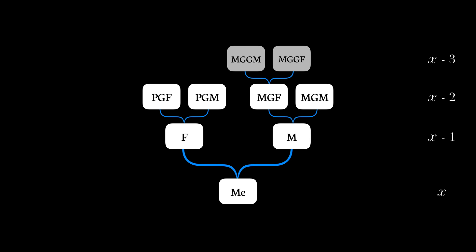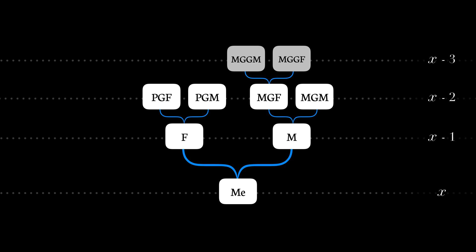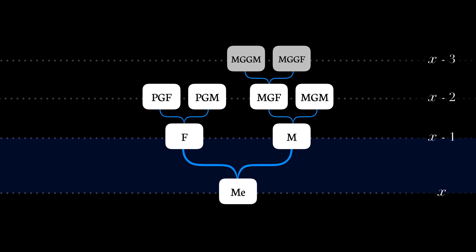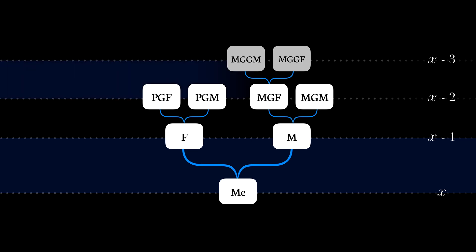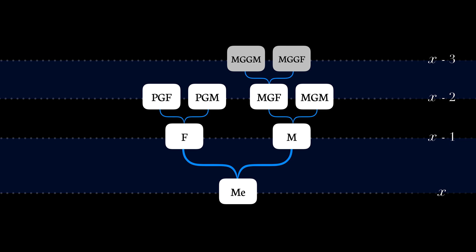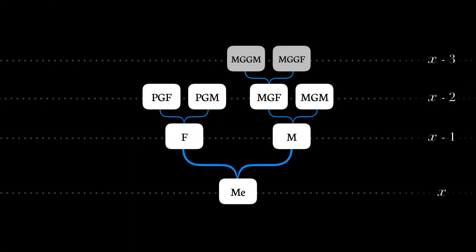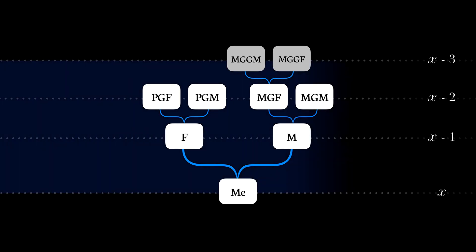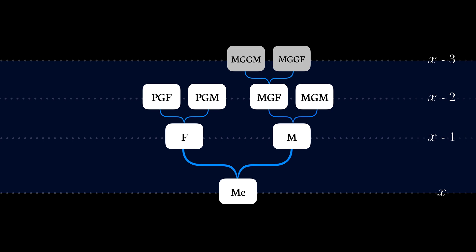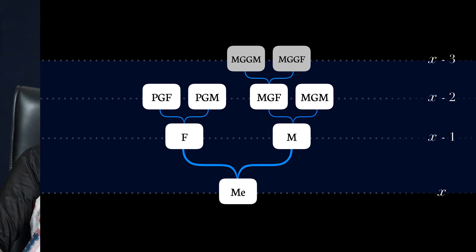Now if we compare two continuous generations, say generation X and generation X-1, the similarities are greater than the dissimilarities. Even if we take generation X-2 and generation X-3, we will still find that these generations have a lot of similarities — dissimilarities are rare. Two continuous generations hence exhibit a significant continuity in their characteristics. Now let us take two discontinuous generations — in other words, there is a gap between them. If we compare generation X with generation X-3, the dissimilarities are greater in comparison to the previous example where we considered continuous generations.